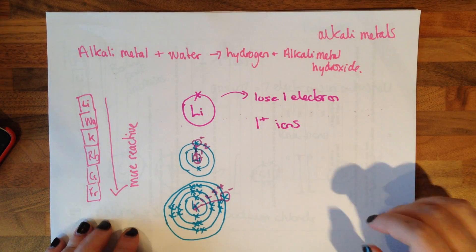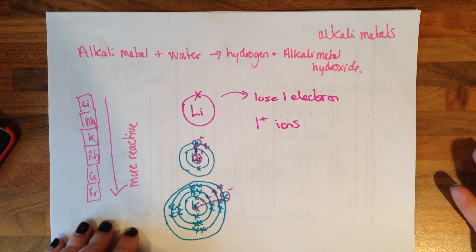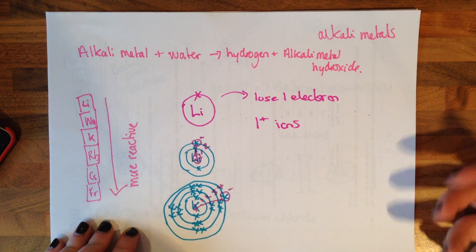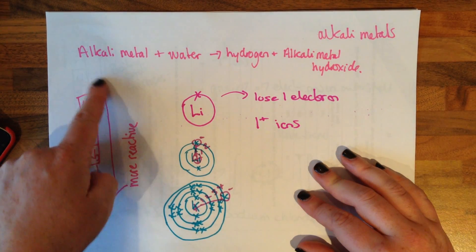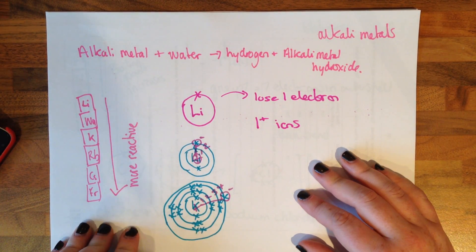So the alkali metals, when they react with water, they're going to produce hydrogen and an alkali metal hydroxide. It's a very violent reaction. You might see a flame. It dissolves in water. As you go down the group, it gets more reactive.